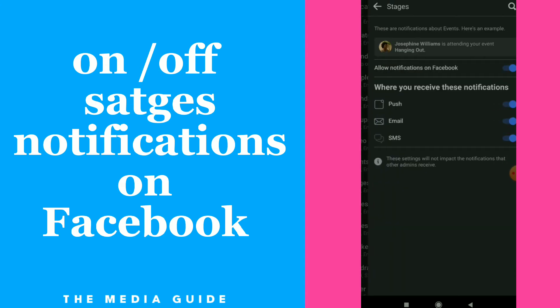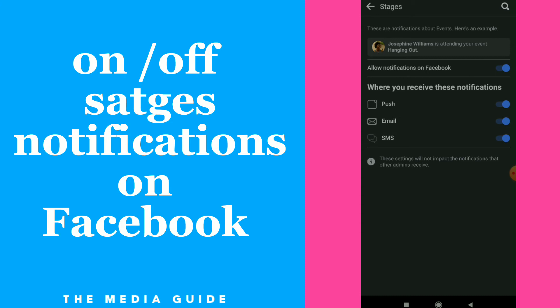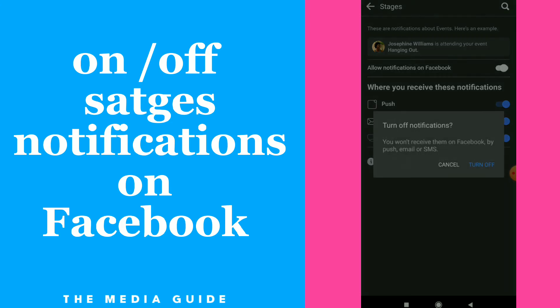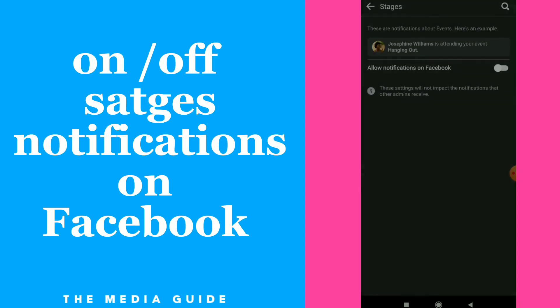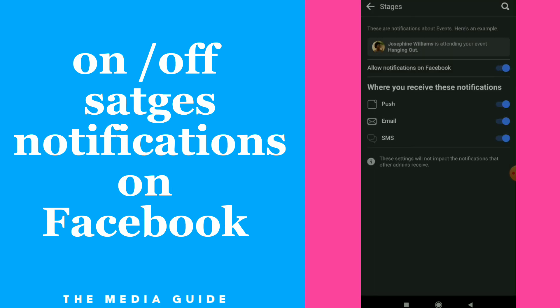Scroll down and you're going to find Stages. Click on it. Here, all you need to do is turn off this option — you won't receive them on Facebook by push, email, or SMS. Or if you prefer, just choose where you want to receive those notifications. That's it, easy and quick.